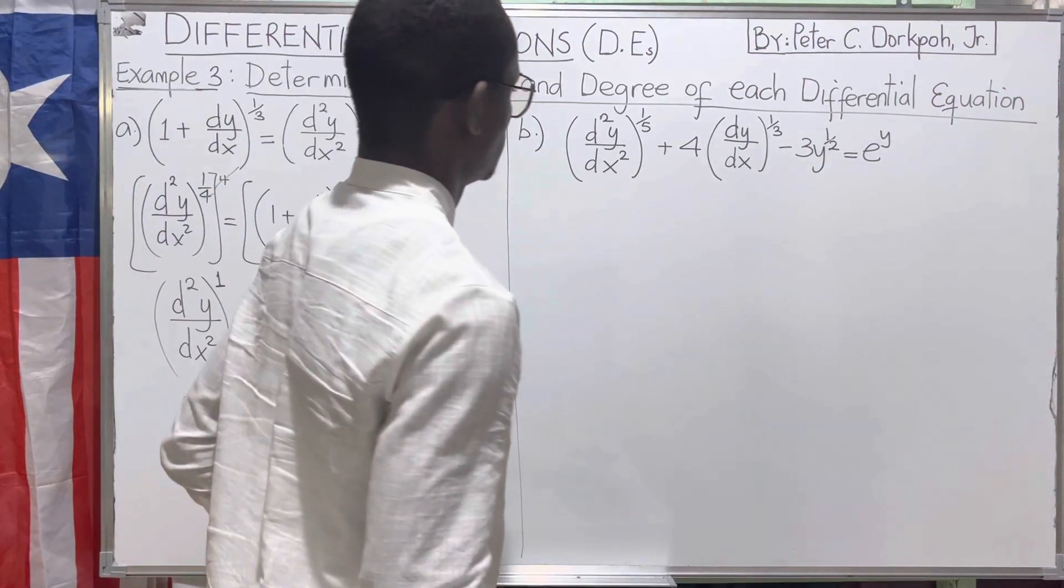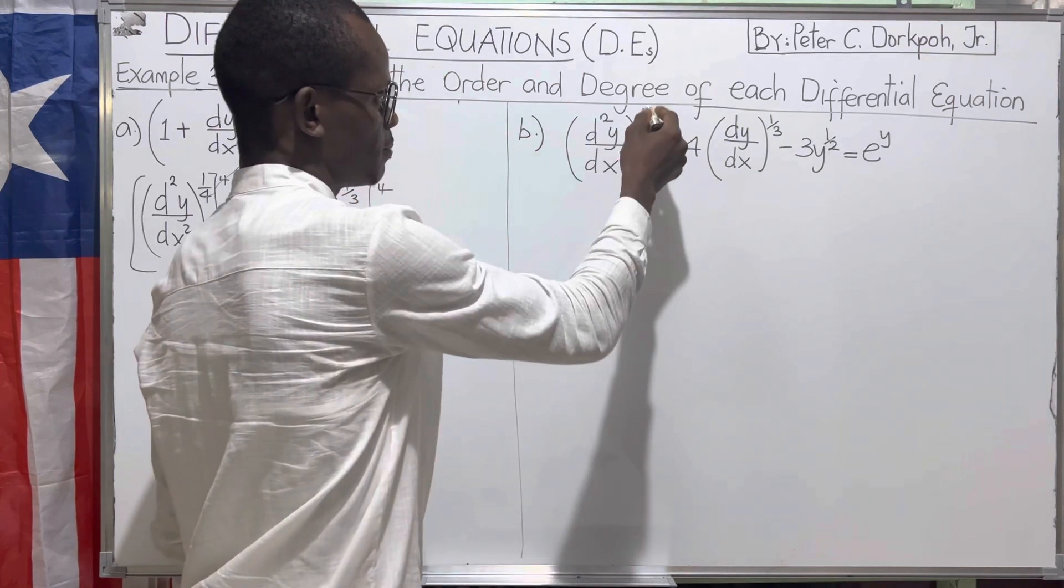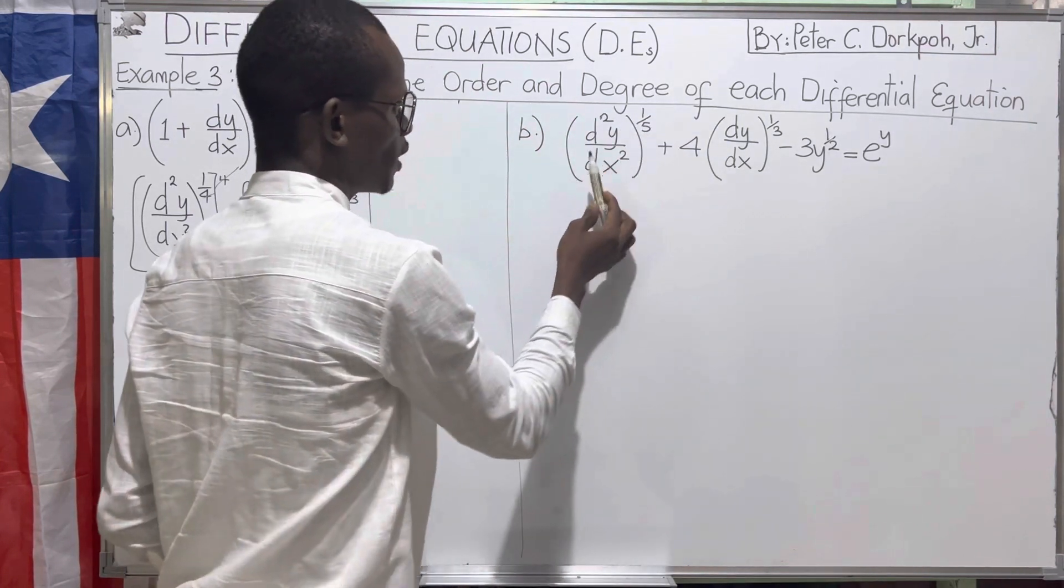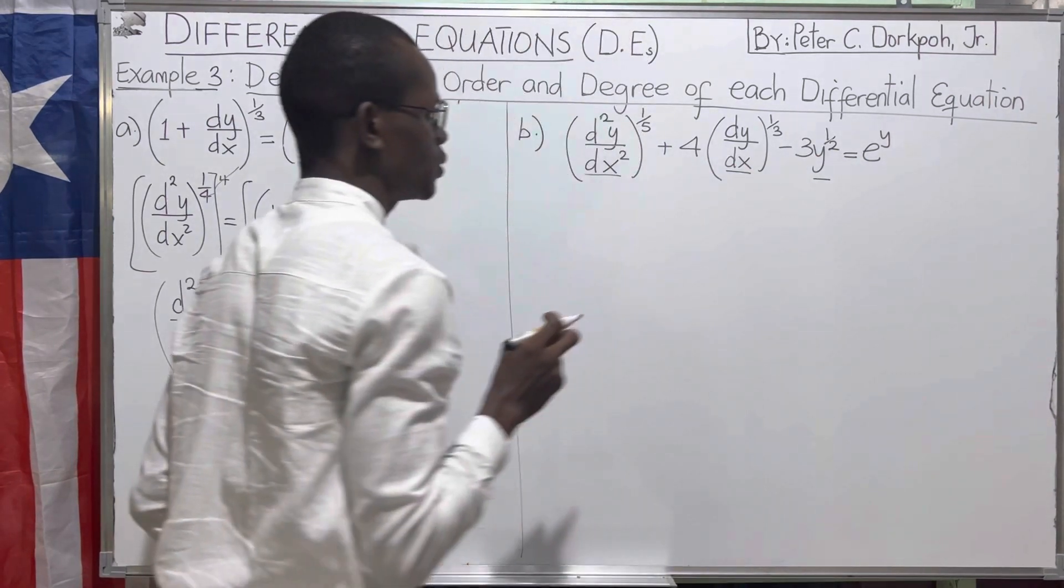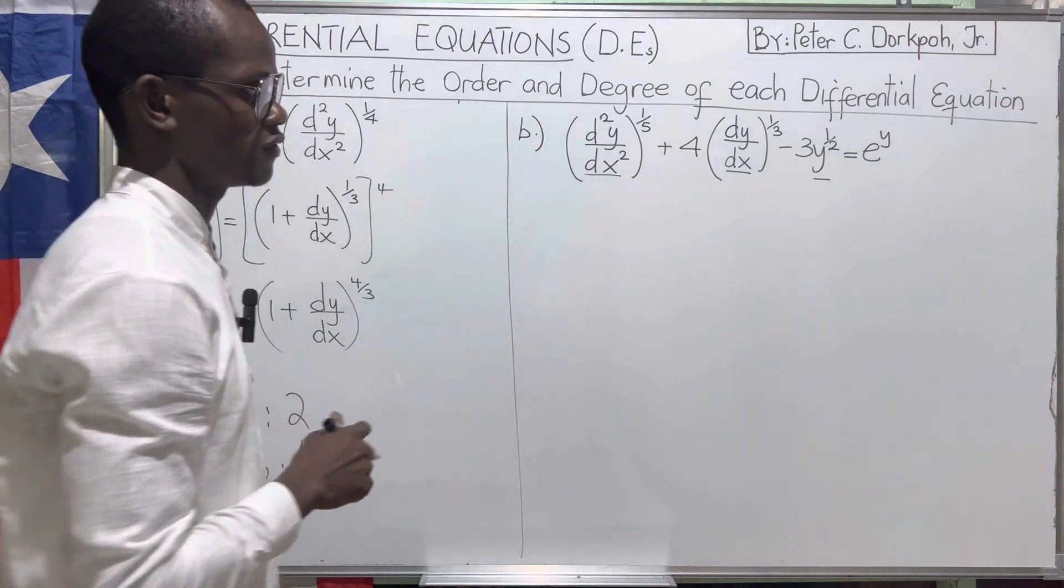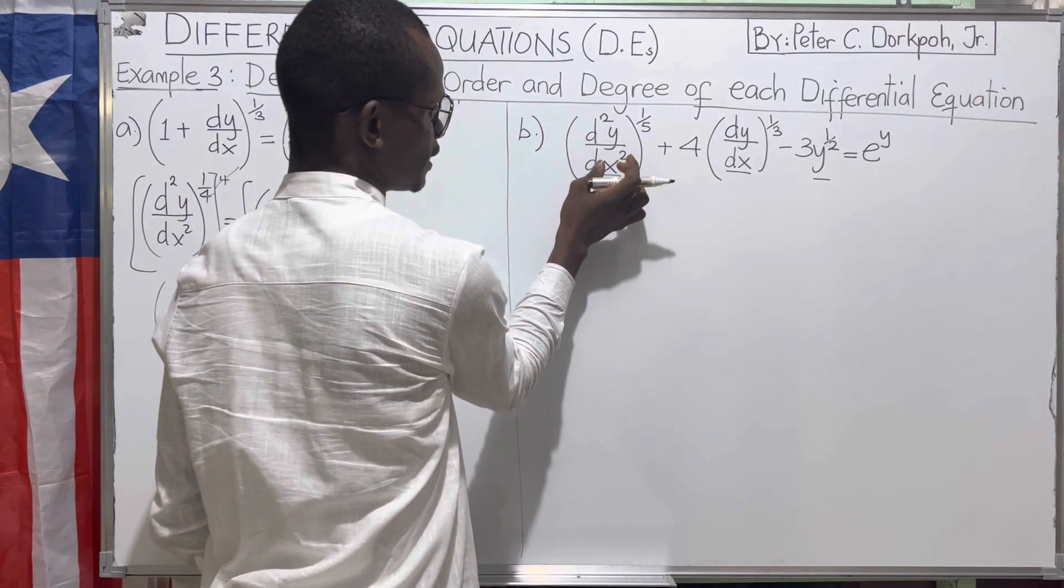The next one says, d²y/dx², all raised to the power one over five. We look among one, two, and three. Which one of them is the highest derivative? The first one is the highest derivative. Because this is the highest derivative, we solve for this highest derivative.